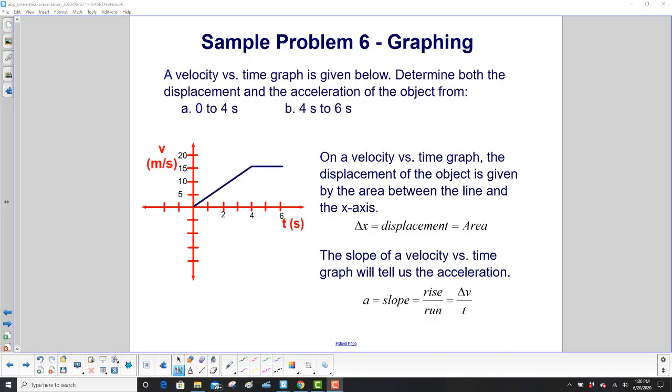Two things we need to know about a velocity time graph. The displacement of the object is given by the area between the line and the x-axis. So let's just look from 0 to 4 seconds. Draw a little line here. This is the area we're talking about. That area gives us a displacement, which is delta x.